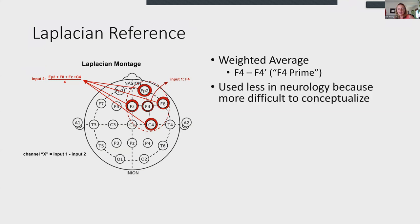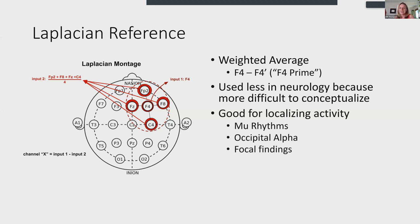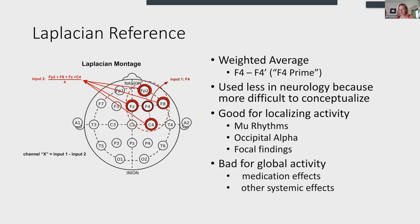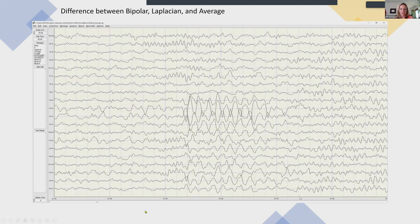Laplacian is used less in neurology because it's more difficult to conceptualize. Laplacian makes things pop — like the right eyeshadow will make your eyes pop — revealing new rhythms, occipital alpha, and focal findings. It's really great for enunciating a morphological feature, but bad for global activity, not good for medication effects or other systemic findings, since those require a broader view.